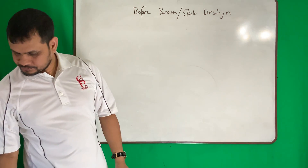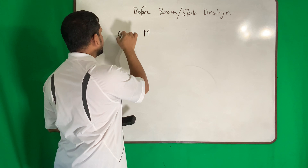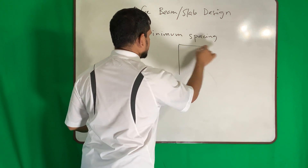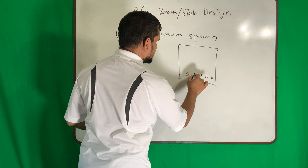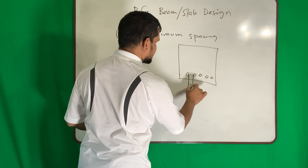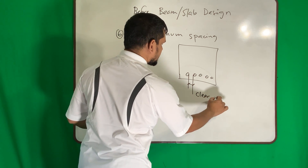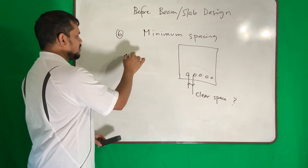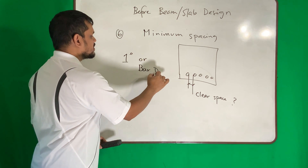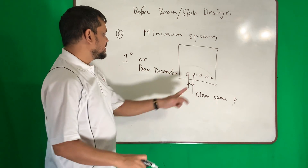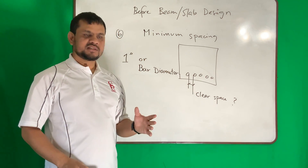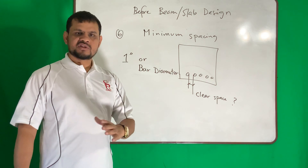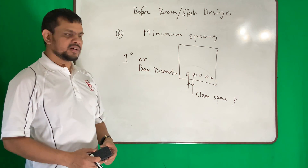Number six is minimum spacing. If you have many bars, what should be the minimum clear space between any two bars? That clear spacing should be at least 1 inch or the bar diameter, whichever is larger. This applies to any member — beam, column, slab, foundation.